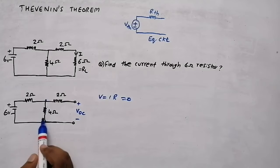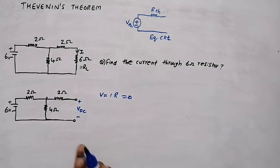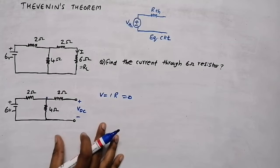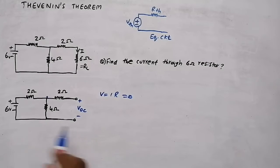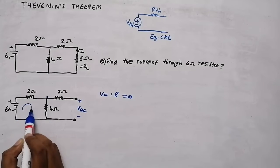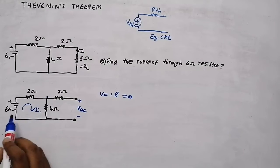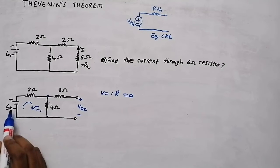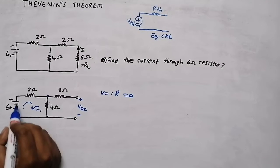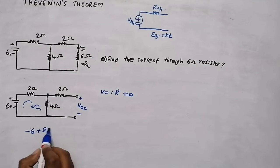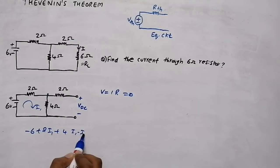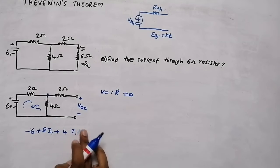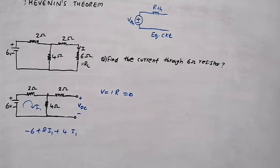To find the voltage at this point, we can use any method — mesh analysis, nodal analysis, or even the voltage division rule. Mesh analysis is easier for me. We assume a current I1 flowing in the circuit and write the mesh equation: minus 6, plus 2I1, plus 4I1. Since I2 is zero, we don't need to include it. That equals zero.